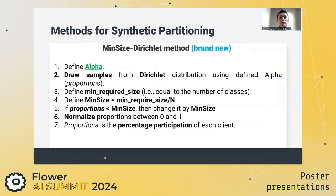As a solution, we propose the mean size Dirichlet-based method that defines a required minimum size for the clients, and from there we define the mean size as the minimum required size divided by the number of examples. If the proportions already calculated for each client using the Dirichlet distribution are smaller than our calculated mean size, we set that proportion equal to the value of mean size. Finally, we normalize the obtained proportions between 0 and 1.